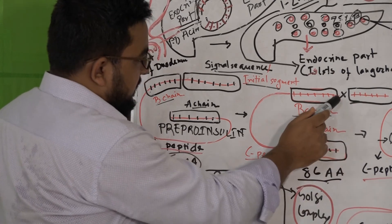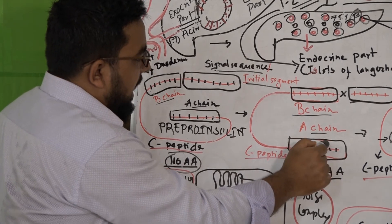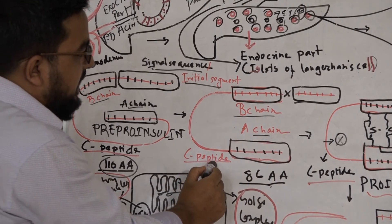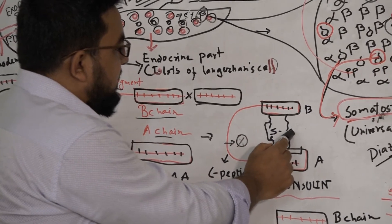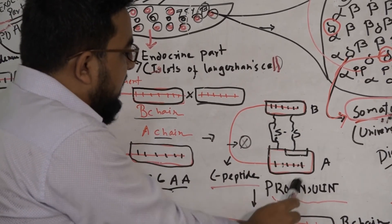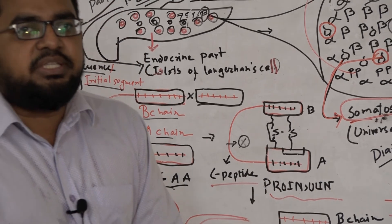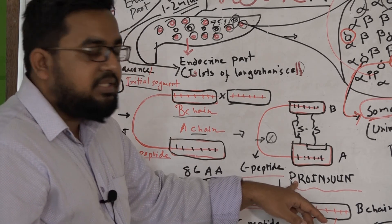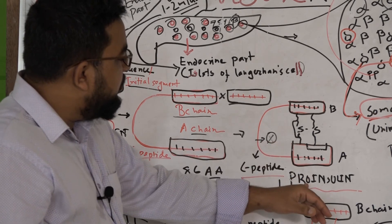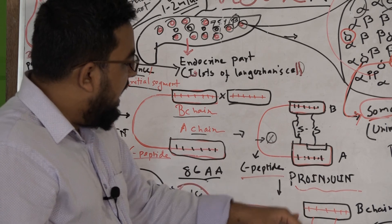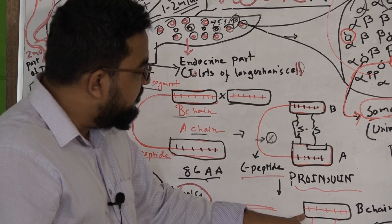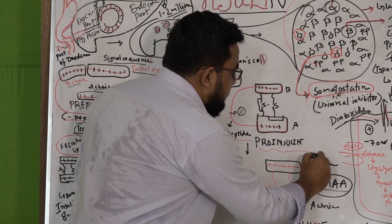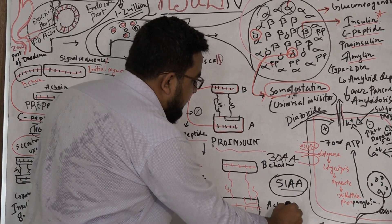By cutting the initial segment, the structure formed is called proinsulin, in which there is a B chain, an A chain, and a C peptide interlinked with disulfide linkages. In humans, proinsulin is composed of 86 amino acids. This proinsulin is then converted into insulin and C-peptide by cutting out the C peptide. Insulin is composed of 51 amino acids: the B chain contains 30 amino acids and the A chain contains 21 amino acids, and they are interlinked by disulfide bonds.